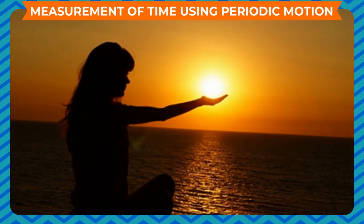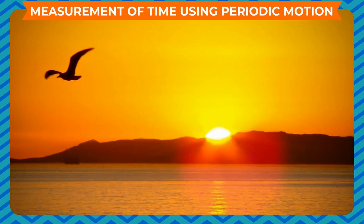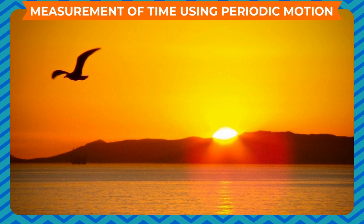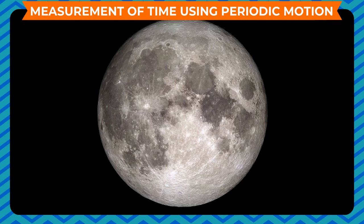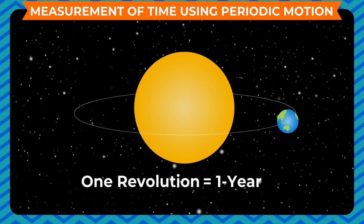Our ancestors noticed that many events in nature repeat themselves after definite intervals of time. For example, you found that sun rises every day in the morning. The time between one sunrise and the next was called a day. Similarly, a month was measured from one new moon to the next. A year was fixed as the time taken by the earth to complete one revolution of the sun.